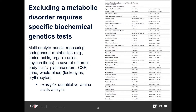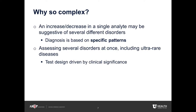However, excluding a metabolic disorder requires specific biochemical genetics tests. Those are multi-analyte tests that quantify endogenous metabolites in several different body fluids. For example, I'm showing you the results of a normal amino acid profile in plasma. This test quantifies amino acids and amino acid-related compounds and is used when we suspect a metabolic condition that affects amino acid metabolism, transport, or the urea cycle. This analysis is also used for diet monitoring of patients with metabolic disorders and for nutritional assessment. Because of its clinical utility, this is one of the most frequently ordered tests in the Biochemical Genetics Lab, but is also a very complex test with more than 40 analytes.